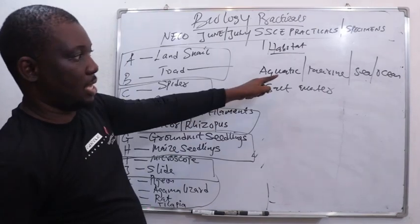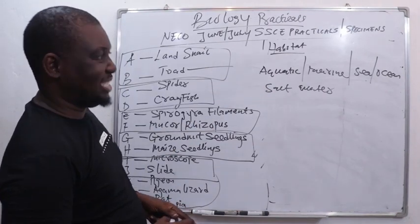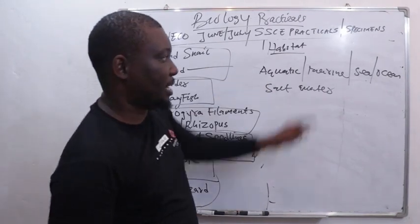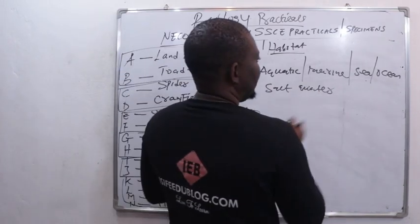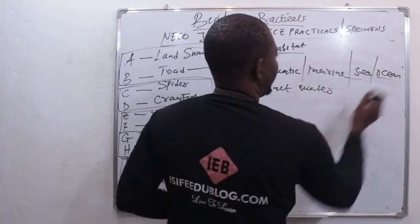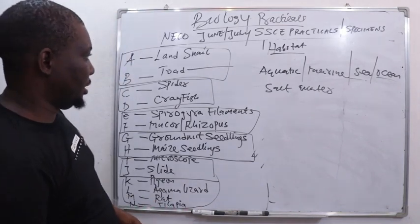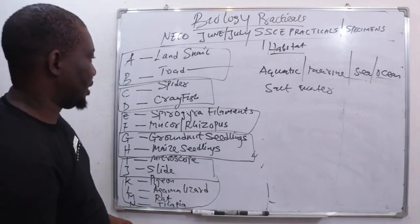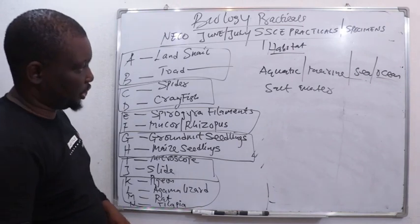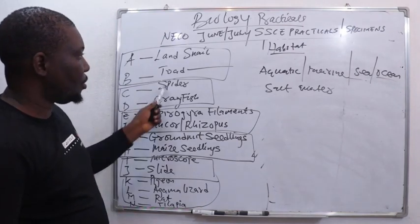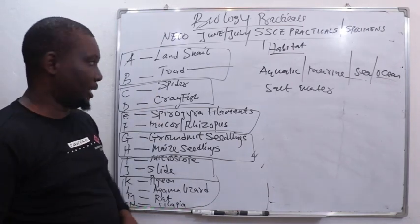You can't just say aquatic without specifying. You must state the particular place — for example, marine. The two examples of marine water are sea and ocean. So these are the key habitats where one can easily find crayfish. This covers the habitat.